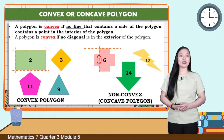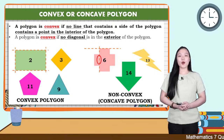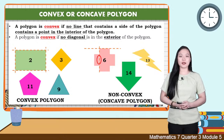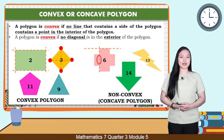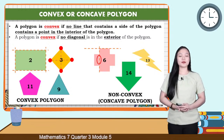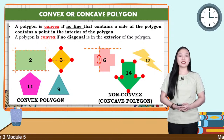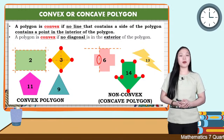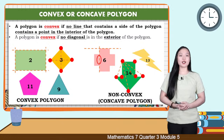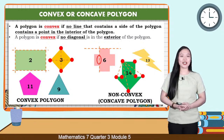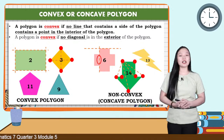Let's try to extend the side of polygon 6. As you can see, there is a line that contains a side of the polygon passing through the interior of the polygon. That's why polygon 6 is concave. Another way is checking the exterior of the polygon through its diagonals. Let's create diagonals in polygon 3 — there is no diagonal in the exterior, so polygon 3 is convex. Now let's create diagonals in polygon 14 — there is a diagonal in the exterior, so polygon 14 is a concave, non-convex polygon.